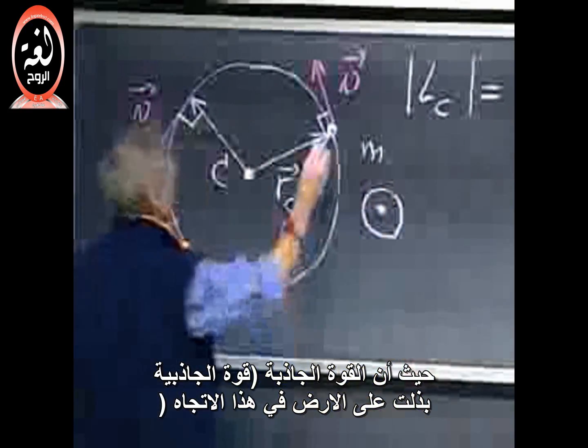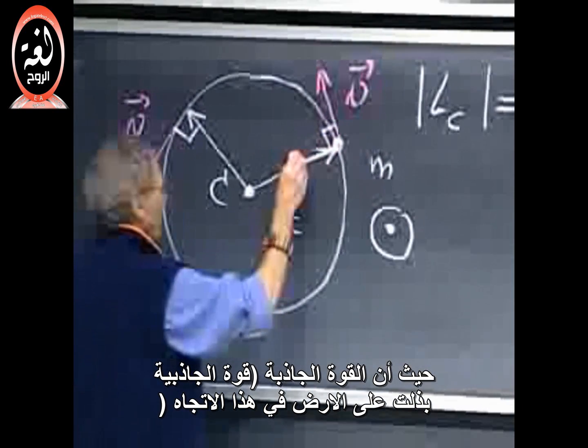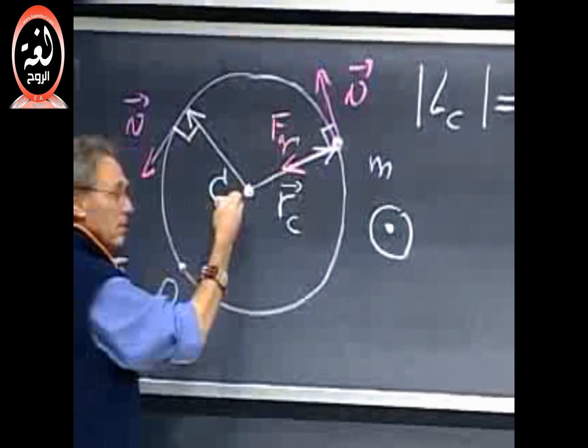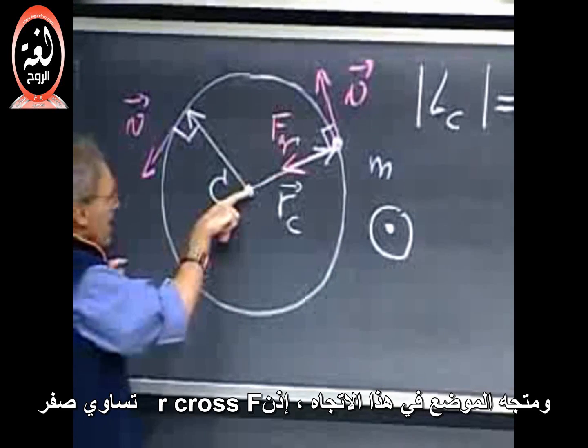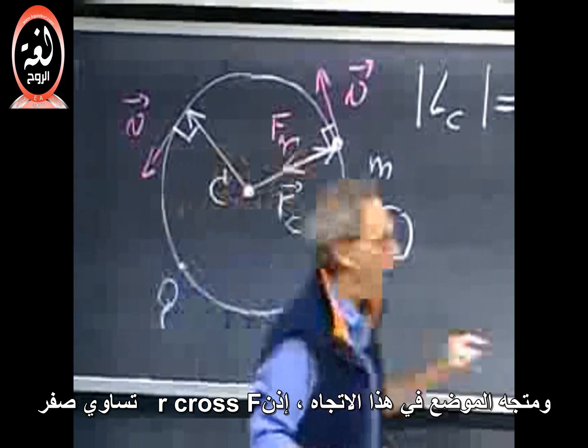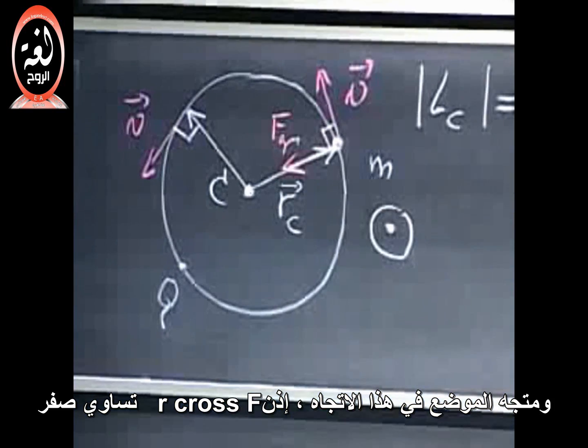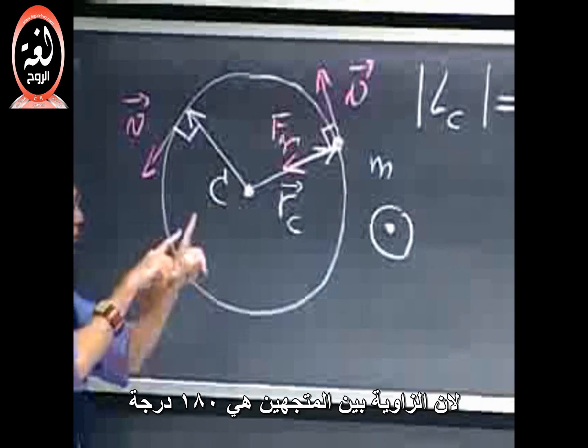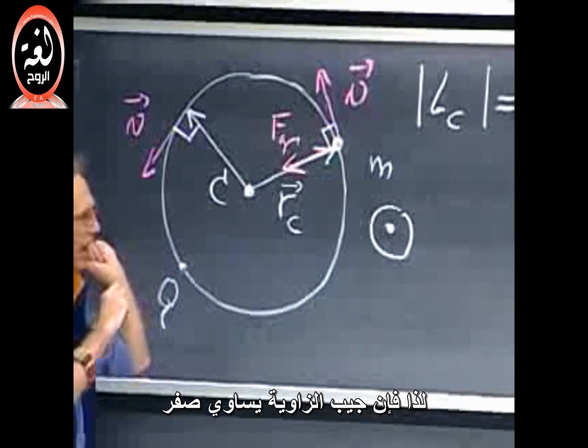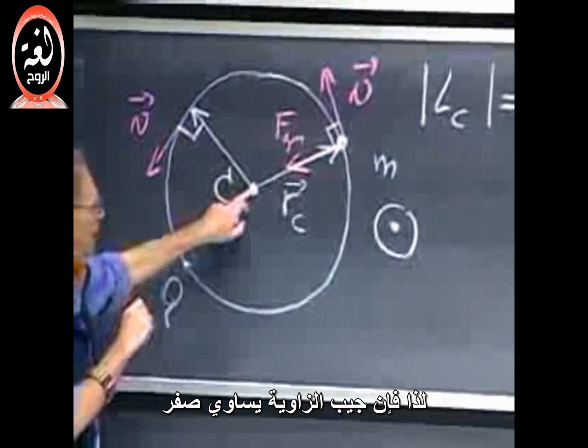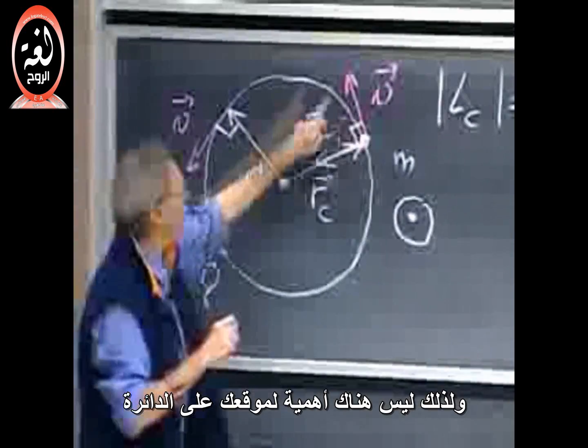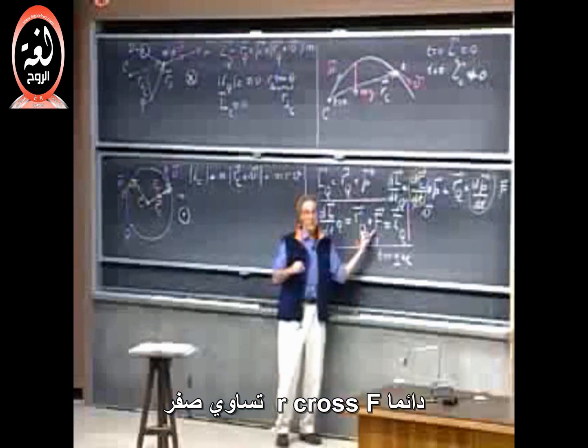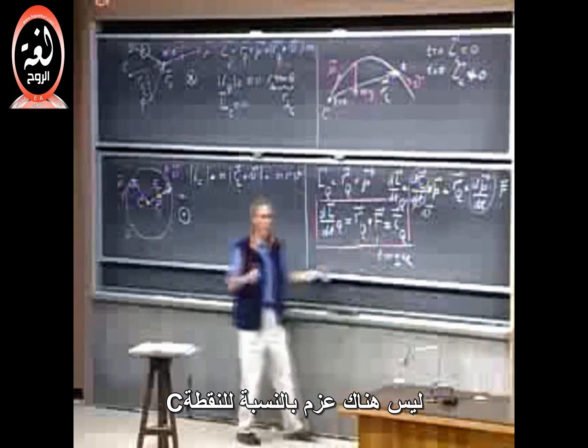The force, the attractive gravitational force exerted on the Earth, is in this direction. The position vector is in this direction. So R cross F is zero. There is no torque relative to this point C because the angle between the two vectors is 180 degrees, and so the sine of the angle is zero. Therefore, no matter where you are on the circle, always R cross F will be zero. There is no torque relative to point C.